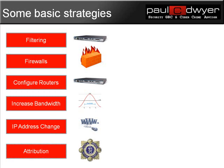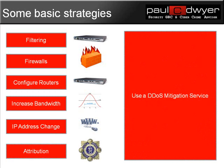Finally, attribution — that's bringing people to the letter of the law and being able to prosecute them. Unfortunately, this is very rare, but it is a way to obviously stop the attacks. What I would advise as the main way of dealing with the risk of DDoS attacks is to invest in a DDoS mitigation service. So how do you evaluate such a DDoS mitigation service? Let's look at some questions you can ask a DDoS mitigation service provider.